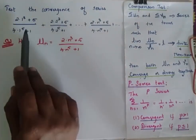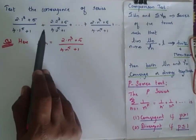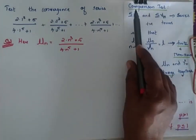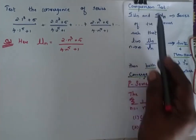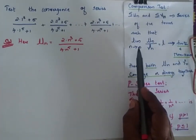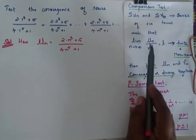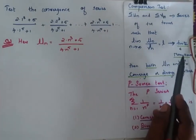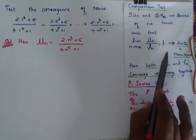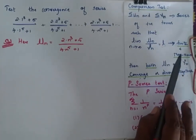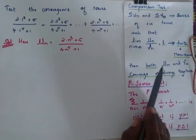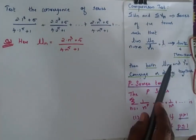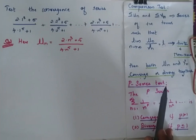Test the convergence of this series. Whenever we are going to test the convergence of a series, we go for the comparison test where we find the limit as n tends to infinity of un by vn, which is equal to a value that is finite and non-zero. If it is so, then we say that un and vn converge or diverge together. To check this, we go for the p-series test.